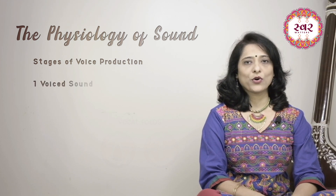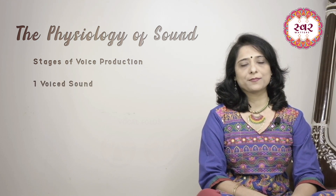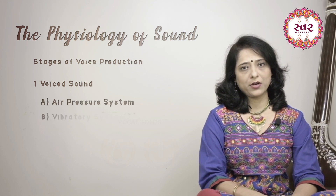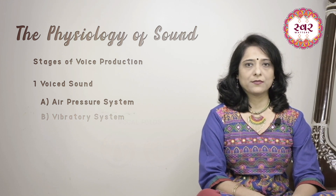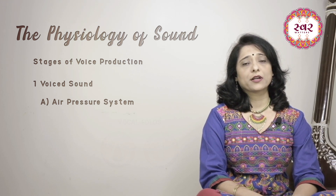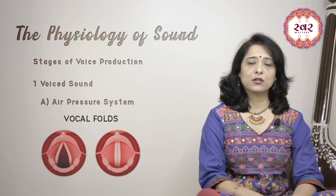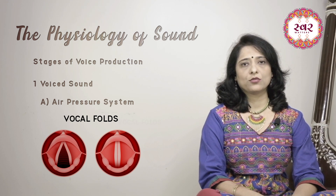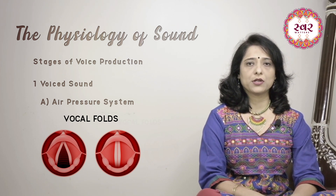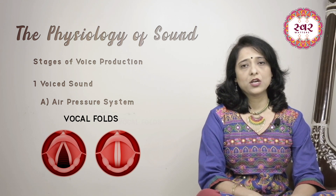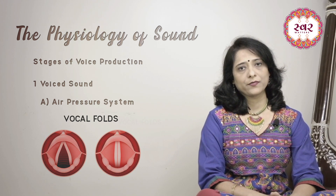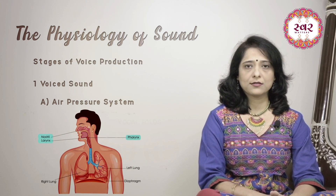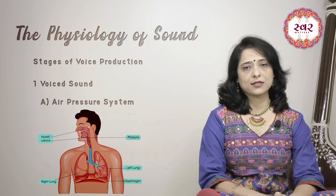First, voiced sound. It involves two subsystems: the air pressure system and the vibratory system. For the air pressure system, we need to have the correct amount of air passing through the vocal folds to power our voice. Controlling the air passing through the vocal folds ensures proper vibrations of the vocal folds, which then produces sound or voice. The organs involved are nose, larynx, pharynx, diaphragm, lungs, and chest muscles.